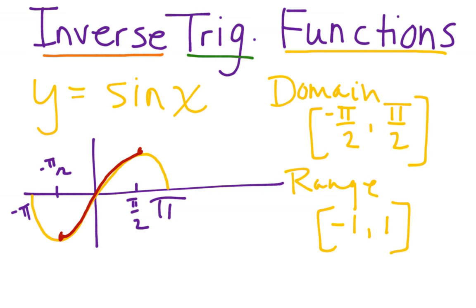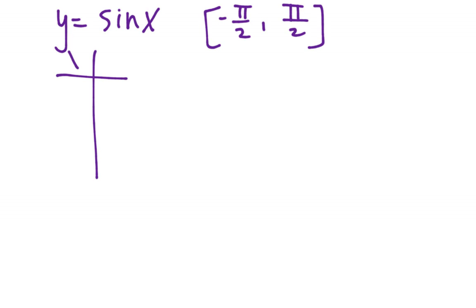So what does that look like when I graph the inverse? Well, let's kind of look at some ordered pairs, and then we can graph this. So if I look at some ordered pairs for y equals sine x from negative pi over two to pi over two, let's look at x and y,